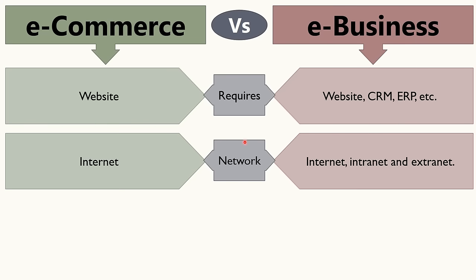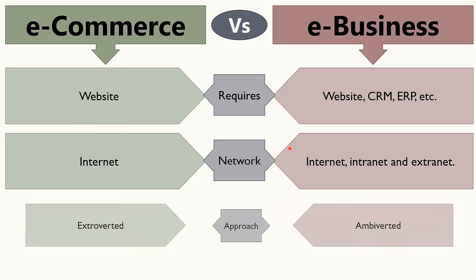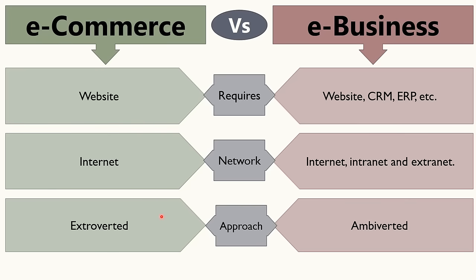When it comes to network, e-commerce requires internet to connect the company with the rest of the world. As against, e-business requires networks like internet, intranet, and extranet. Lastly, e-commerce has an extroverted approach as it deals with external parties only like customers, suppliers, and distributors. On the contrary, the approach of e-business is ambiverted because it deals with internal parties such as employees, along with external parties such as customers, suppliers, distributors, creditors, etc.